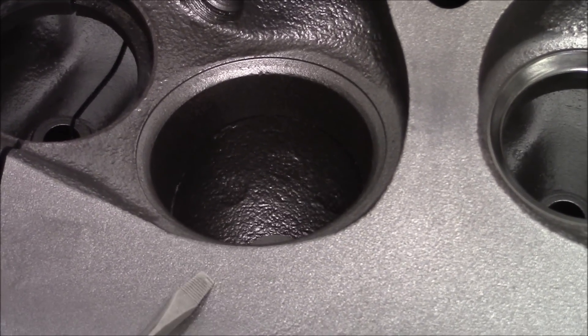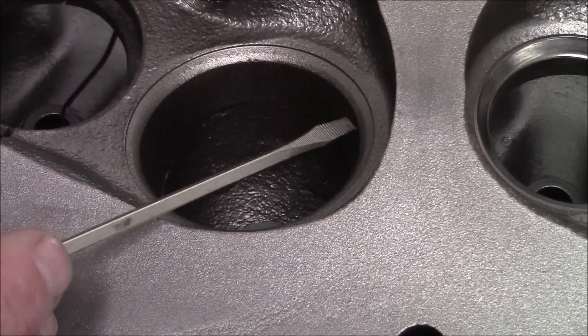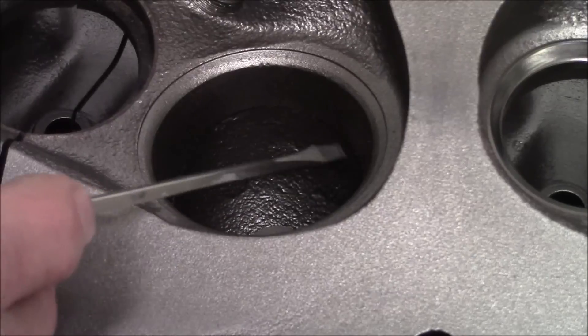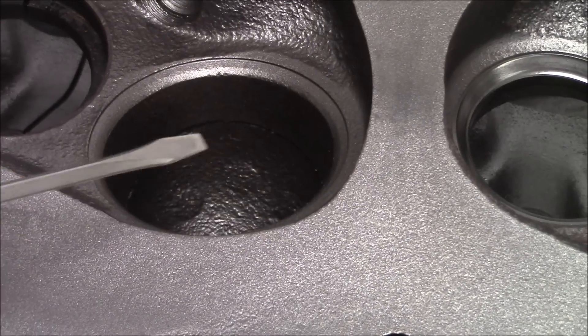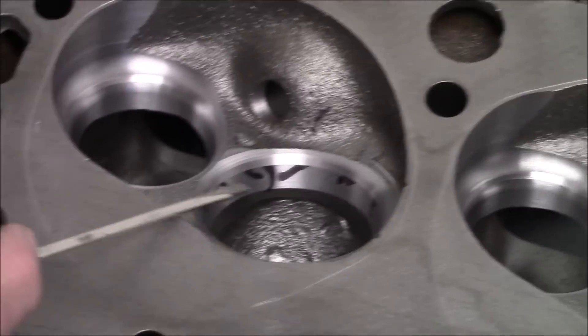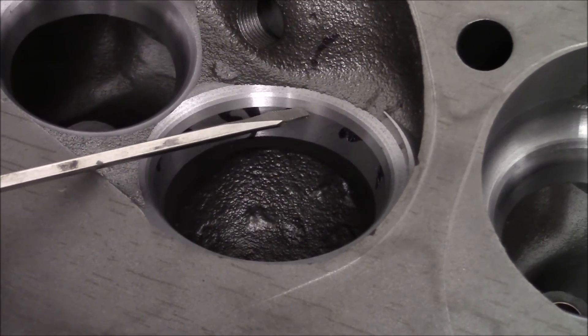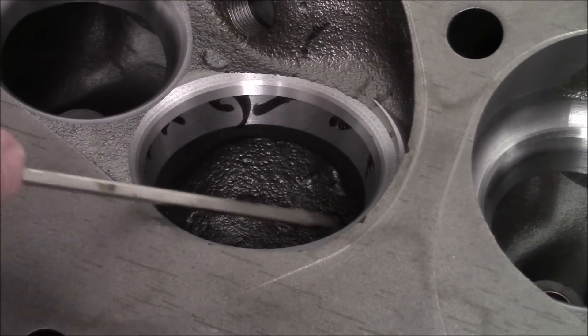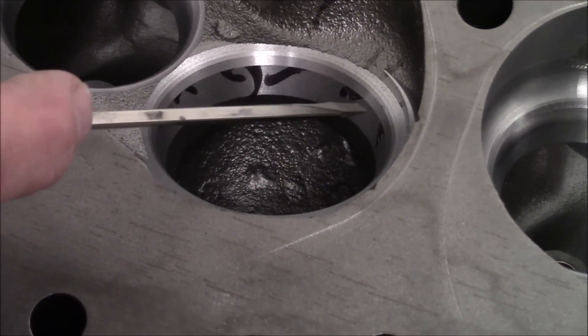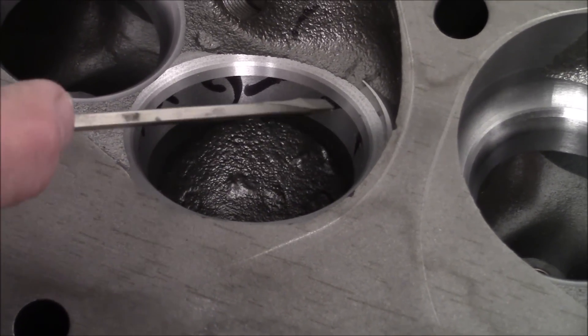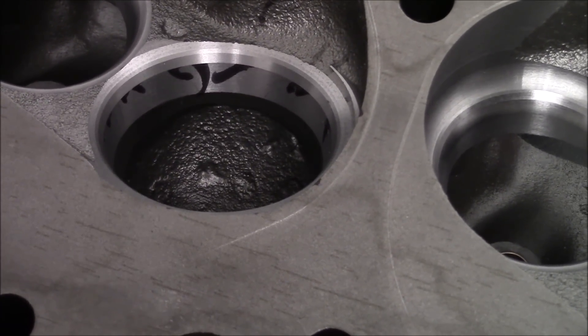We have the factory head here with the 20650 valve job. This is the seat, the 45. Notice how this drops straight down, straight off the seat. Now, here's the head that we put the 2190 intake valve in. Here's our 45. Here's our 60. You see this band right here? That right there, when it's shaped correctly, raises the low lift flow dramatically. And we'll show you as we port the head, the shape that it needs to be.